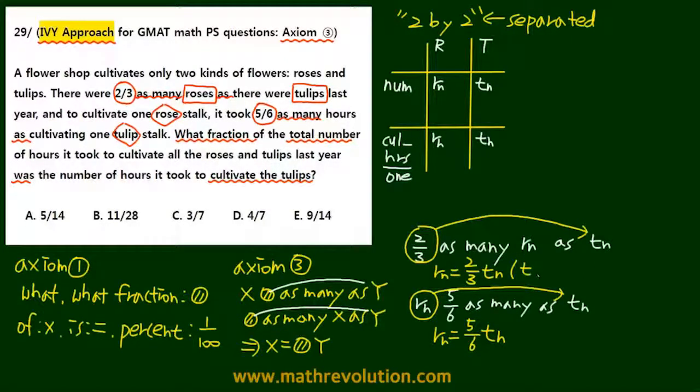And we want to avoid using fractions, so let's call Tn equals 3n. Then Rn becomes 2n because 2/3 of 3 equals 2. Likewise here, let's call Th equals 6h. Then Rh becomes 5h because 5/6 times 6 is 5.